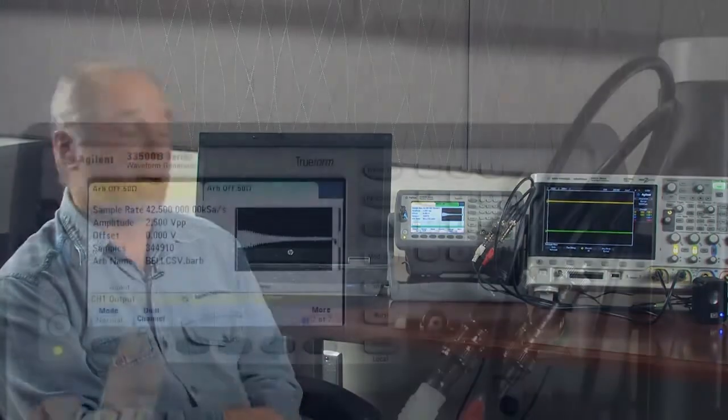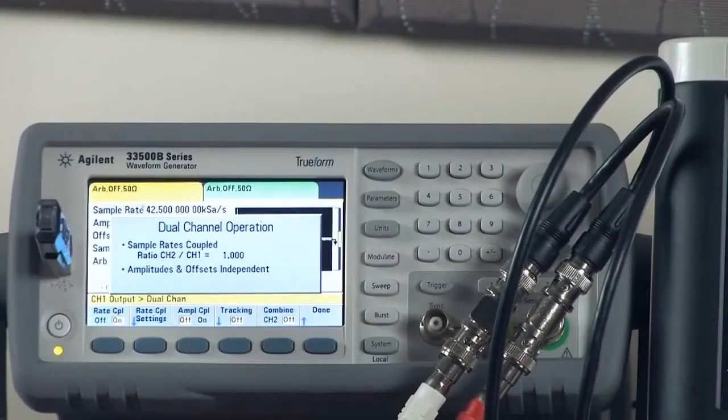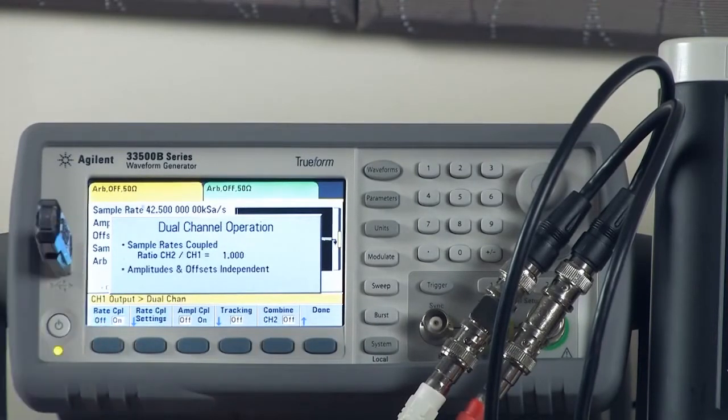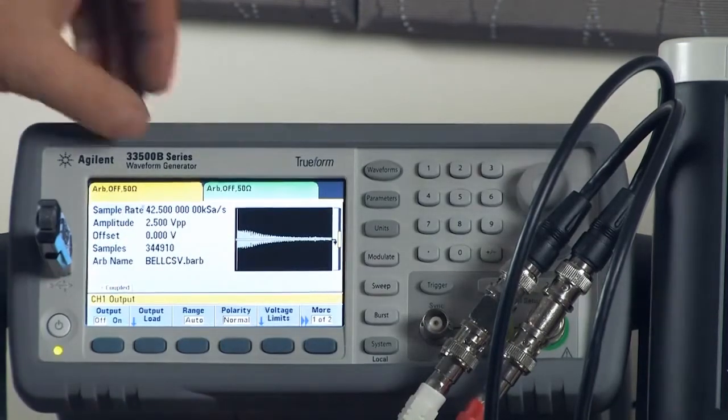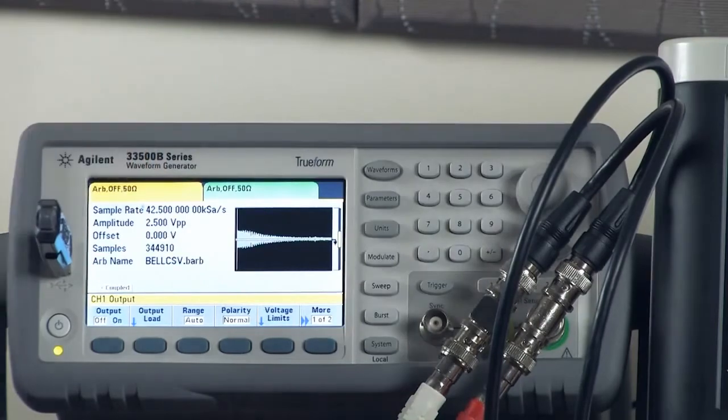And so what I'll do is I'll turn that feature on, and then I'll adjust the sample rate, and we'll be able to hear both channels adjust at the same time. Okay, here's the dual channel mode, and in dual channel mode, I'm going to turn rate coupling on. So now whatever happens on channel one will happen on channel two, and you can see that there'll be a little blue asterisk up by the sample rate.